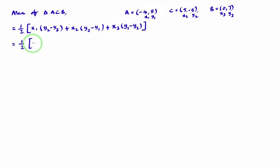The half into, what is X1? X1 is minus 4, into Y2 minus Y3. Y2 is what? Minus 5. Minus Y3 is 7. Plus X2. X2 is what? 5. Y3 is what? Y3 is 7. Minus Y1 is 5. Plus X3. What is X3? X3 is 0 into Y1 is 5. Minus Y2 is minus 5. Minus of minus plus 5.